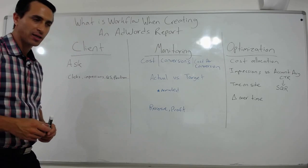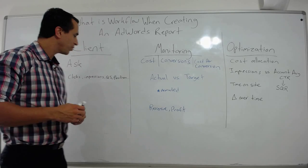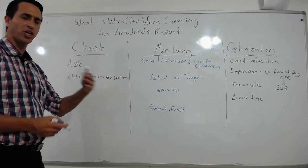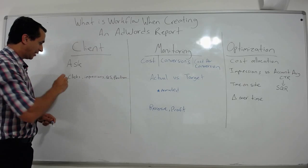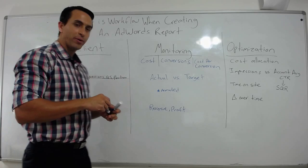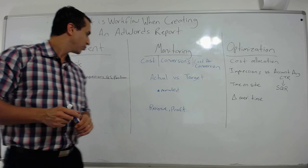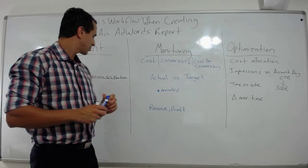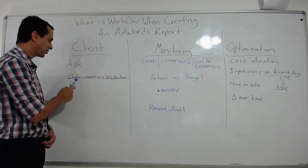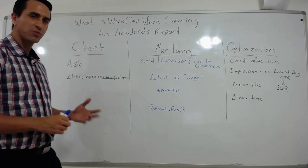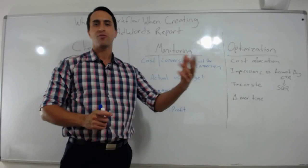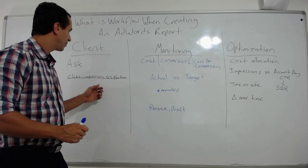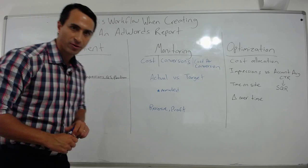Sometimes consultants and agencies send reports with clicks, impressions, quality score, position, and the change over time. No one really cares about that. They're paying consultants to get results. Position, quality score, impressions, and clicks are not results — results are tangible things the client cares about. If there's a specific reason they want to know any of these things, it's fair game, but in my experience, it rarely is.